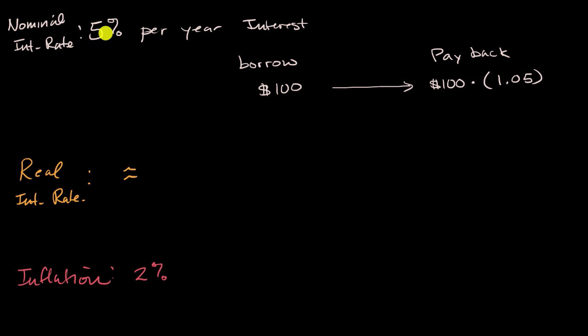So the first way, you'd say, well, this could approximately be equal to the nominal interest rate minus the inflation rate. So you could say this could be approximately equal to 5% minus 2%, which would be equal to 3%. And this is a decent approximation.